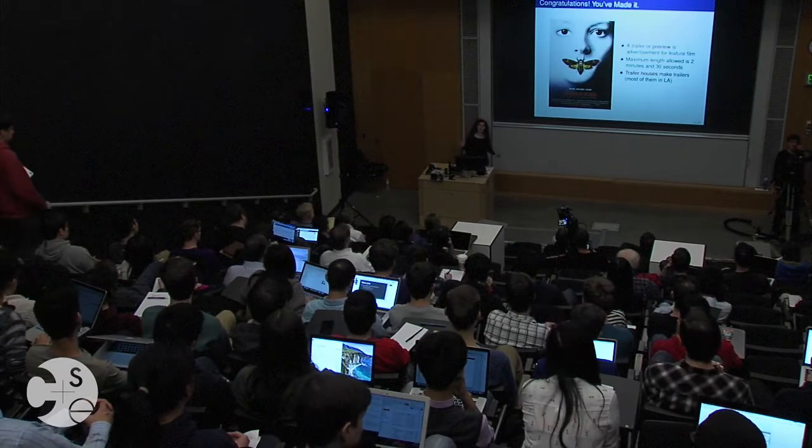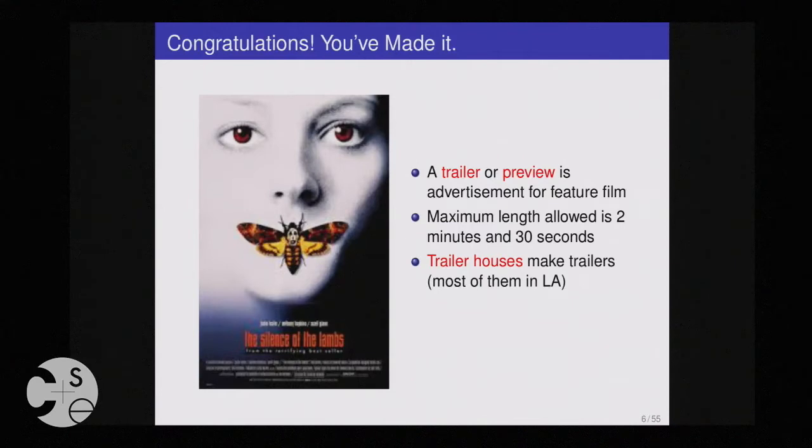Assuming we have a movie like The Silence of the Lambs and we want to produce it, another big industry is how to generate the advertising — the trailer or the preview. Trailers are very much regulated. There are specific rules that cinematographers abide by. The most basic rule is that trailers cannot be beyond 2 minutes and 30 seconds. Hollywood and LA in particular have trailer houses that create the trailers, going through many versions until they settle on the one you see in the cinema.